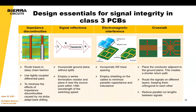To minimize signal reflections, incorporate ground planes without splits and employ series termination resistors placed near the source — within one-sixth wavelength of the switching speed. To minimize EMI, use 3W trace separation and shielding. To avoid crosstalk, place connectors as close to the ground plane as possible, route signals on different layers keeping them orthogonal to each other, and reduce parallel runs between signals.